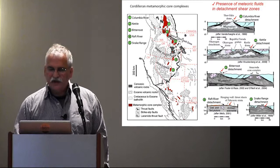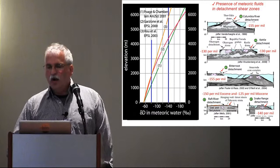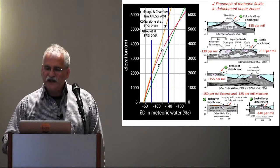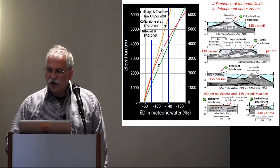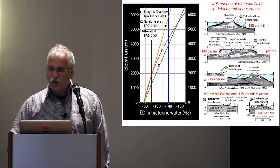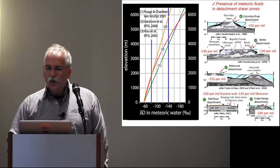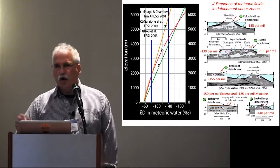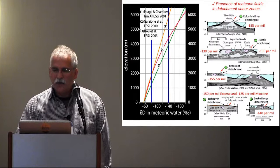We did this work over many different detachment systems using paleoaltimetry. You can see the values for the Columbia River detachment going into the U.S., for the Kettle detachment near the U.S.-Canadian border, as we come down into the Bitterroot, and then the southern detachments such as the Raft River or Snake River detachment in Nevada. The values are very negative — on the order of minus 140 to minus 150 per mil delta-D — indicating that all of these minerals interacted with meteoric water and that the surface was very high at that time.